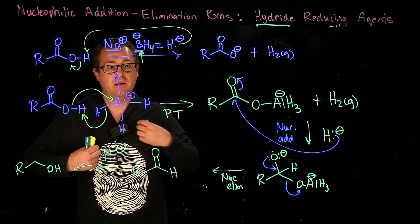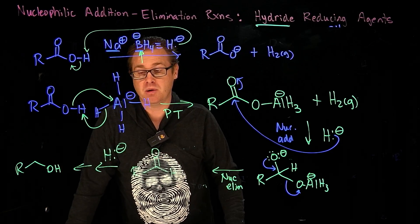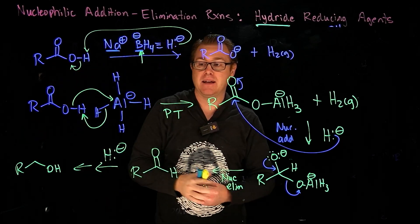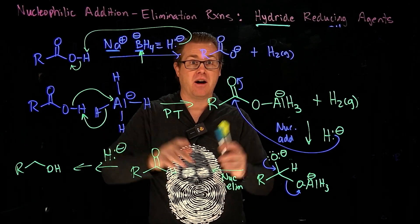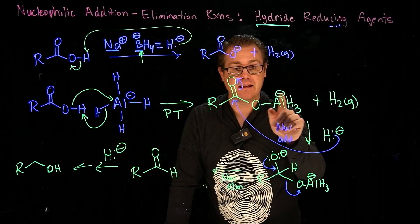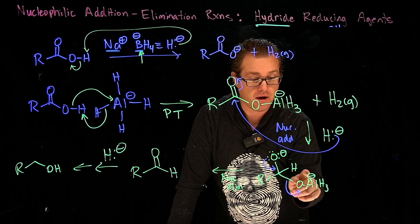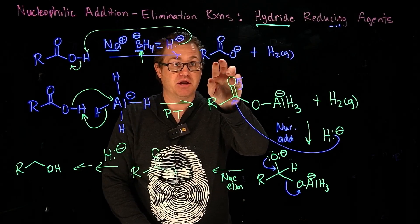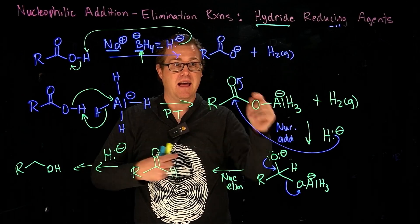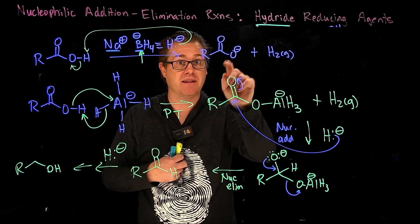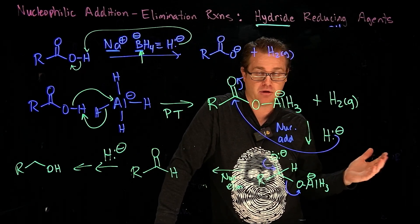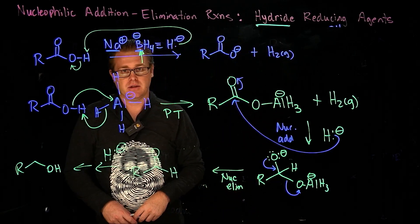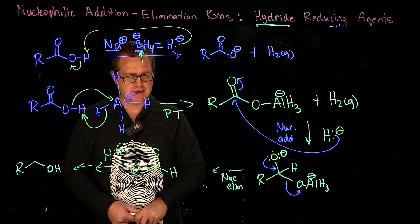So the reason - one main reason why lithium aluminum hydride can reduce carboxylic acids and sodium borohydride cannot - is because that metal forms a bond with that oxygen there. And that allows this oxygen to fall off or to be a leaving group. Whereas with sodium borohydride, you just generate the carboxylate, and that's it. There's no way to get that oxygen to just leave. O- is a horrible leaving group and will not leave. But when it's like this, it can.